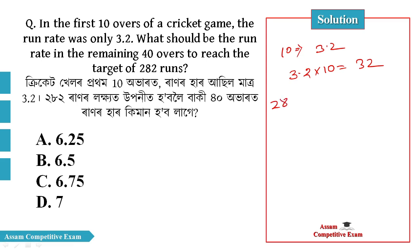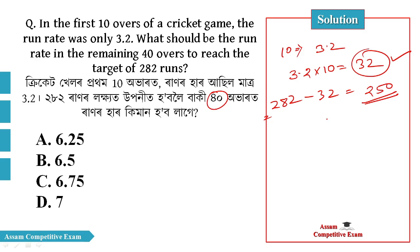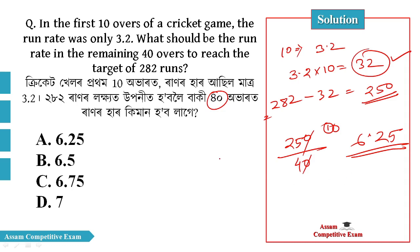The target was 282. So 282 minus 32 gives 250 remaining runs needed. 250 divided by 40 equals 6.25. This is the required run rate, so your answer is option A — 6.25.